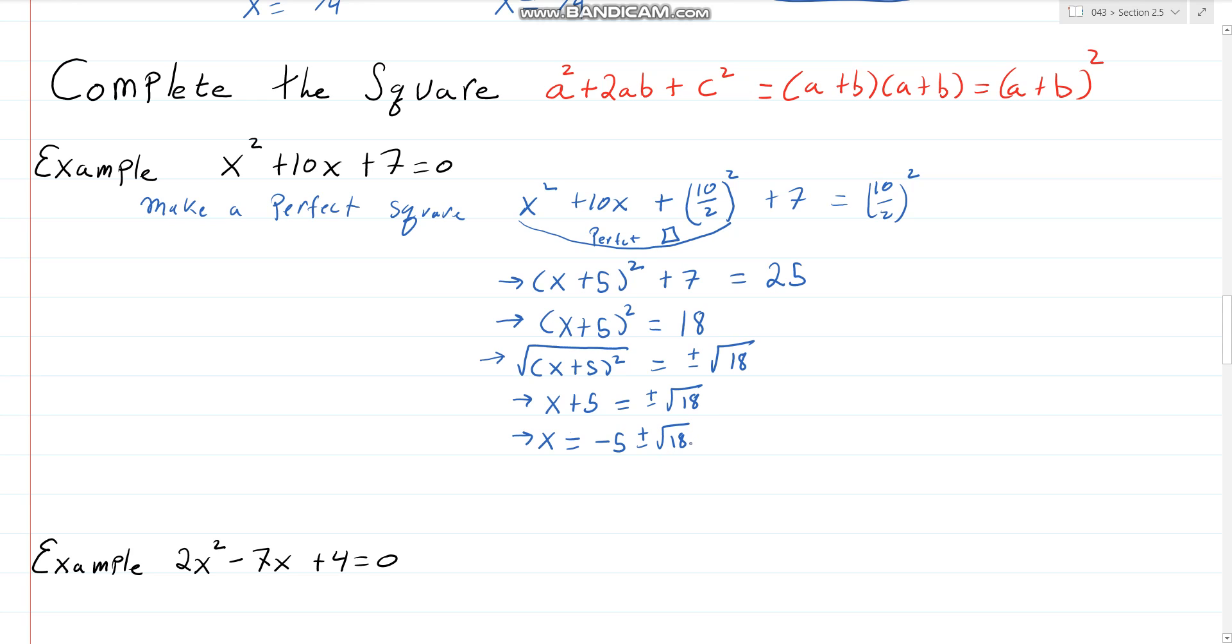Now, if you want, you can actually simplify this using our square root properties, the product rule. That is 9 times 2, and I can take the 9 out. So this is -5 ± 3√2, and that is our two answers. The two answers are x = -5 - 3√2, x = -5 + 3√2. Now if you're trying to type something into WebWork, you're going to have to write SQRT(2). So you could write 3 square root 2.